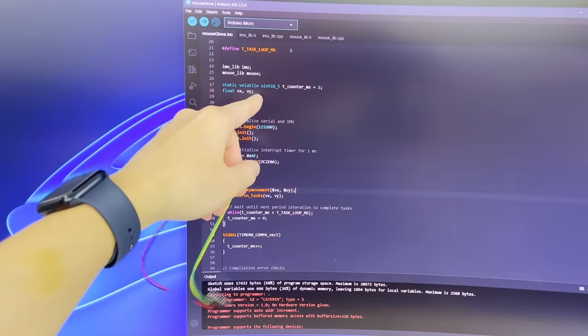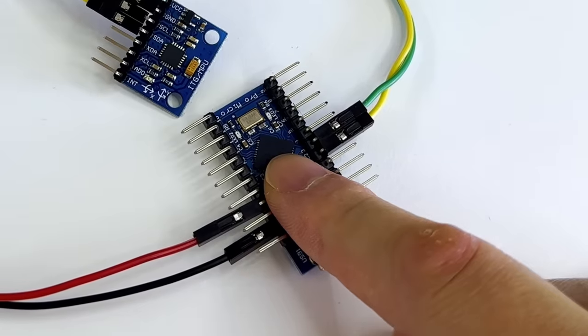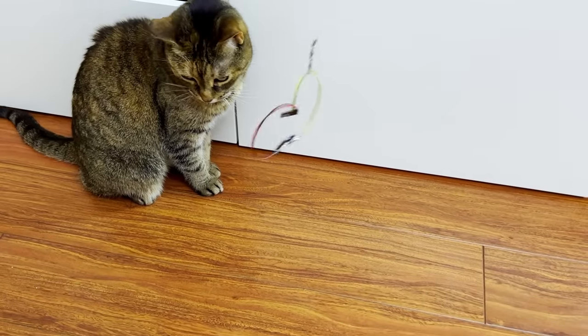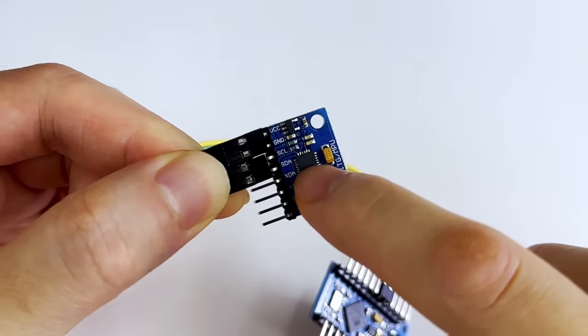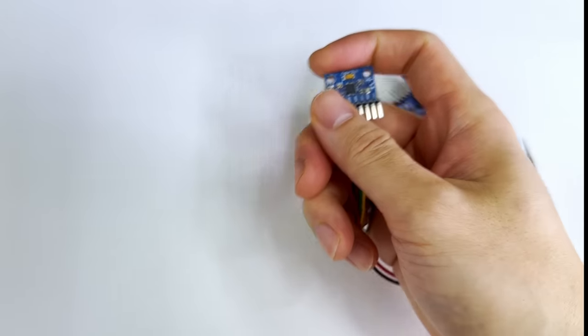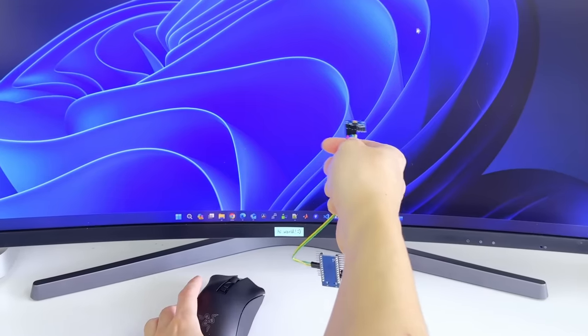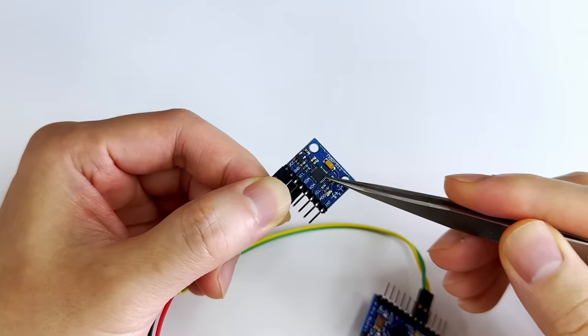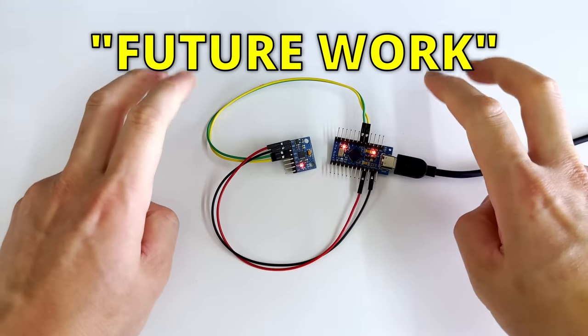To prototype the electronics and software for this mouse glove, we'll be using an Arduino with this sensor. The sensor has an accelerometer and a gyroscope inside this chip. And we technically only need the gyroscope to detect our hand rotations to control the mouse cursor. But we'll leave the accelerometer in our project for future development improvements.